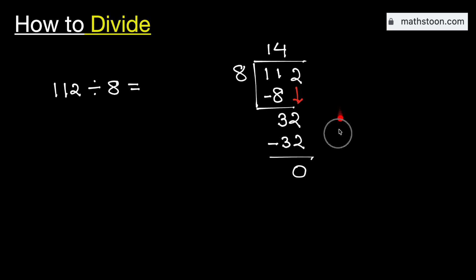Now see that there is no number to bring down and we have got 0. So we will stop. Therefore, 112 divided by 8 is equal to 14, and this is our final answer.